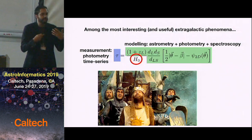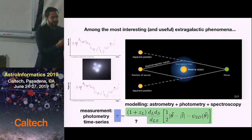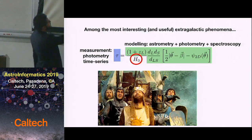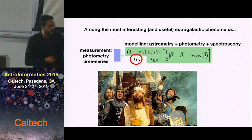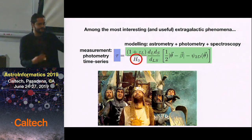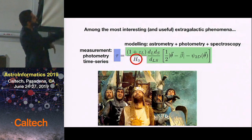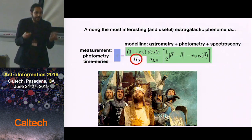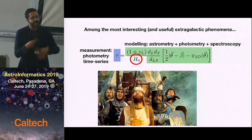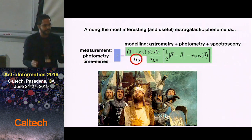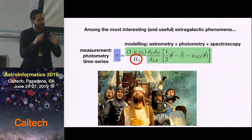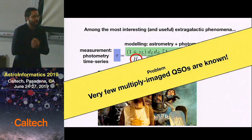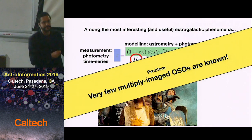Why do we need to look for more lensed quasars? One of the problems is that the modeling part is plagued by issues — your model could be wrong, or your specific quasar could be suffering from microlensing, among other reasons. If we had a large number of quasars, those systematics would probably average out within the error limits. However, we know very, very few lensed quasars.